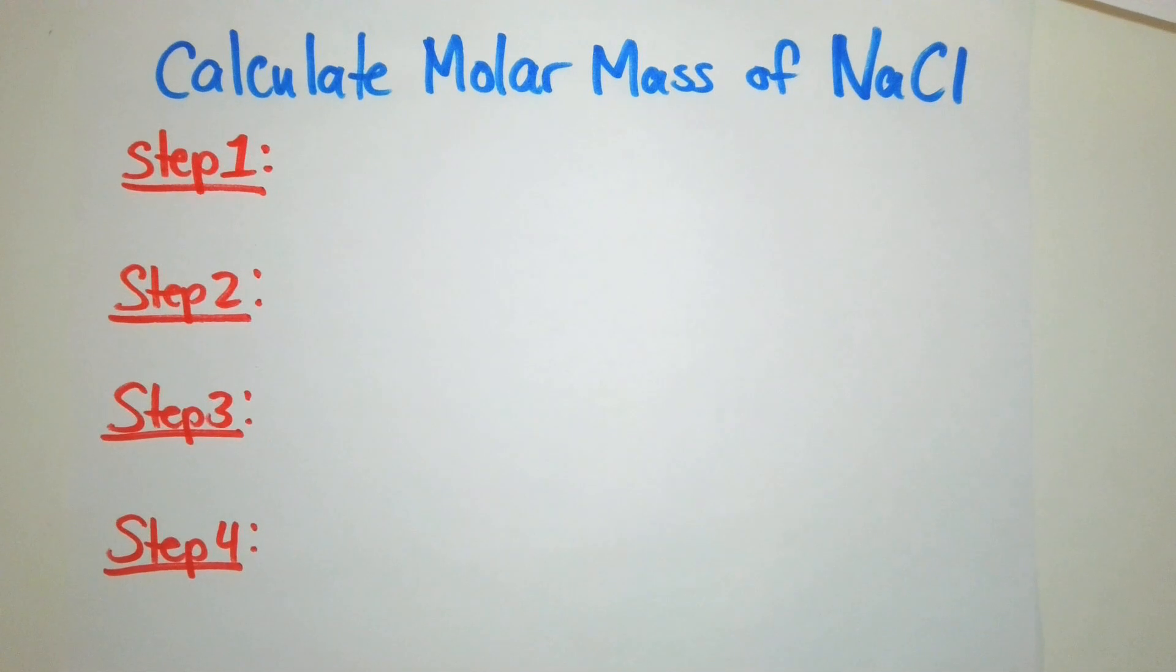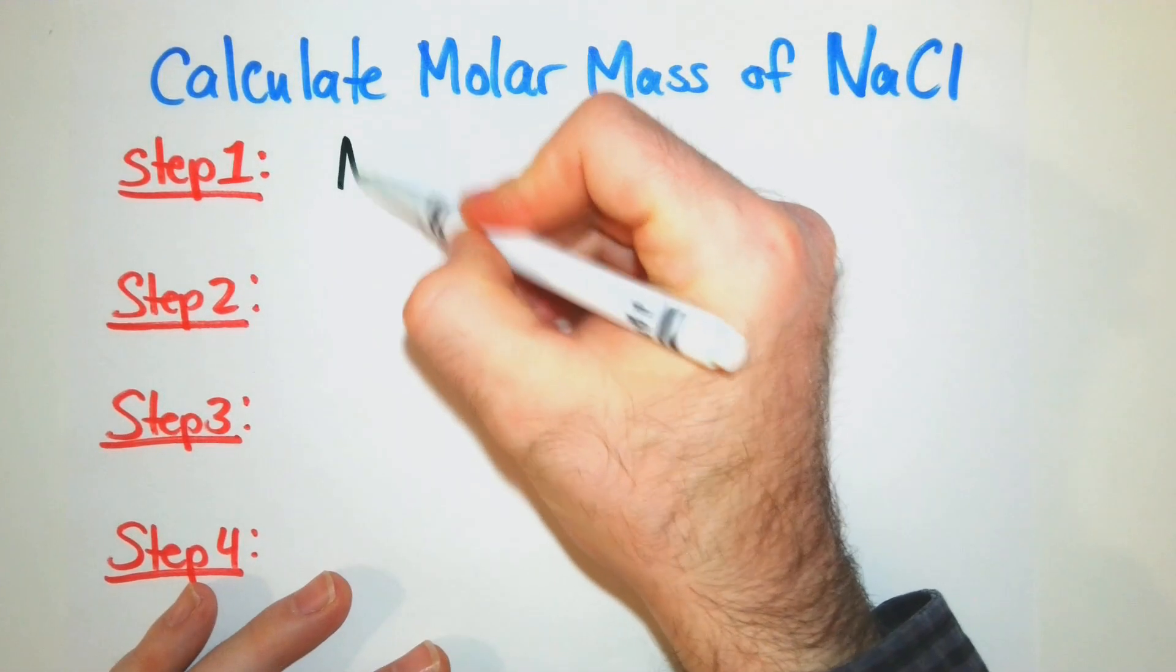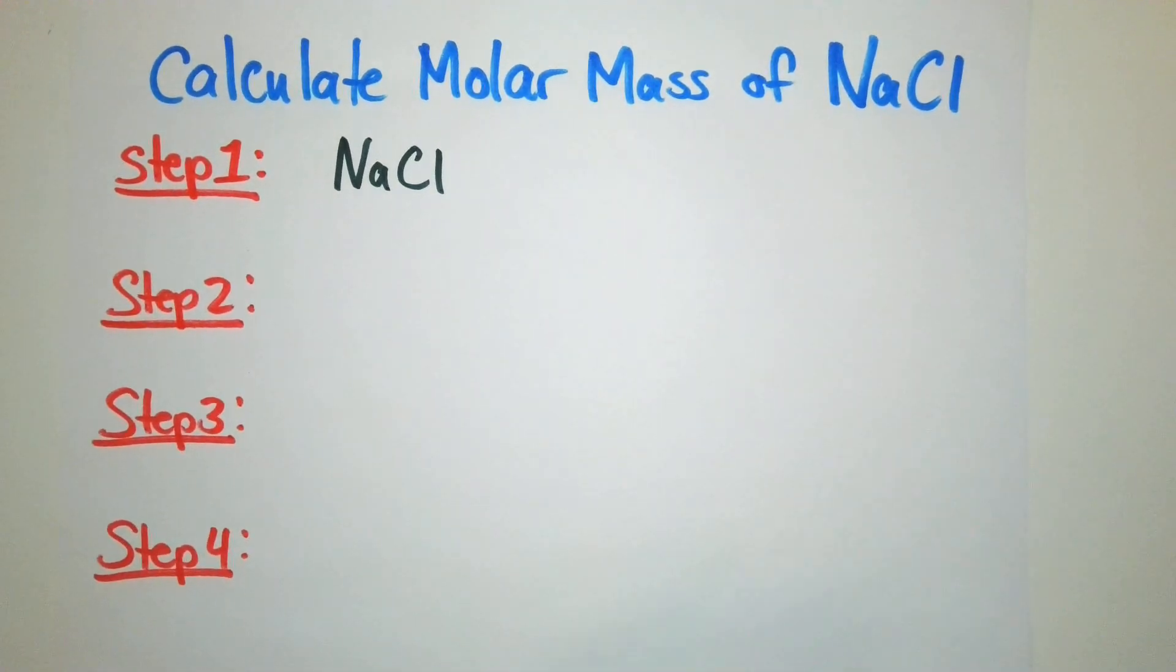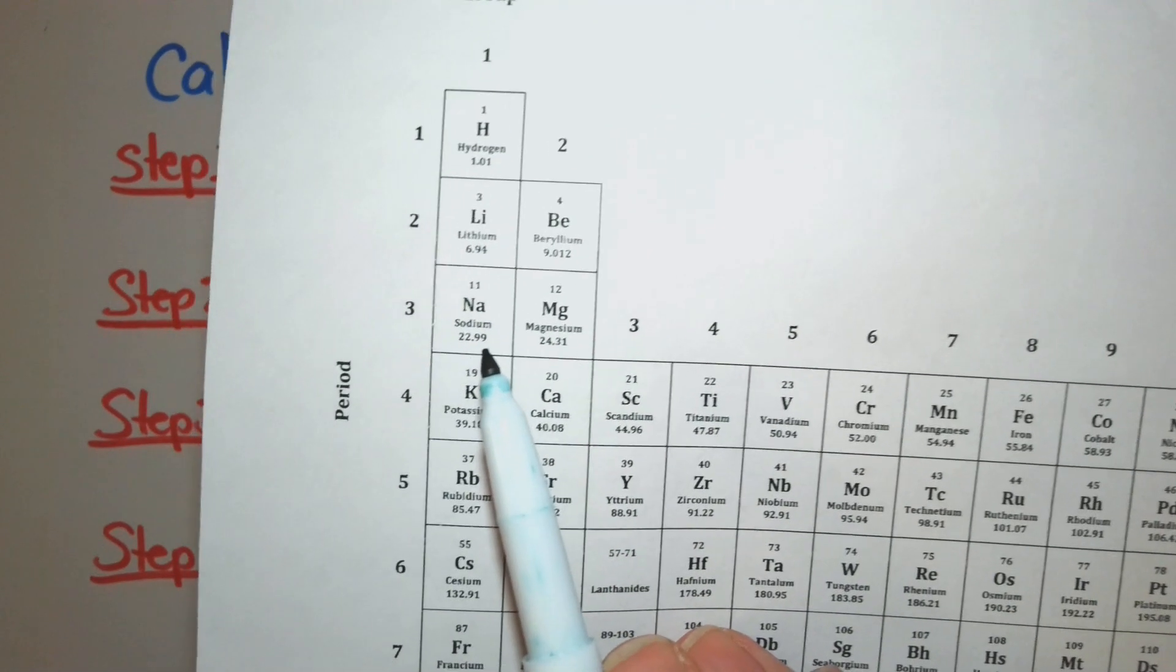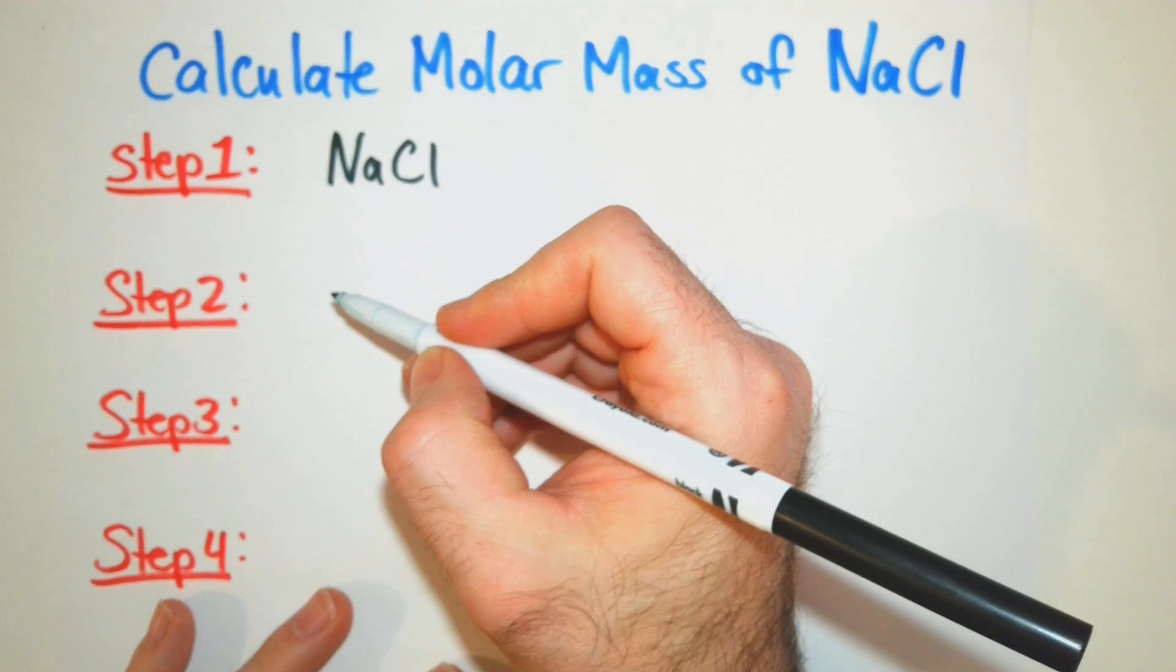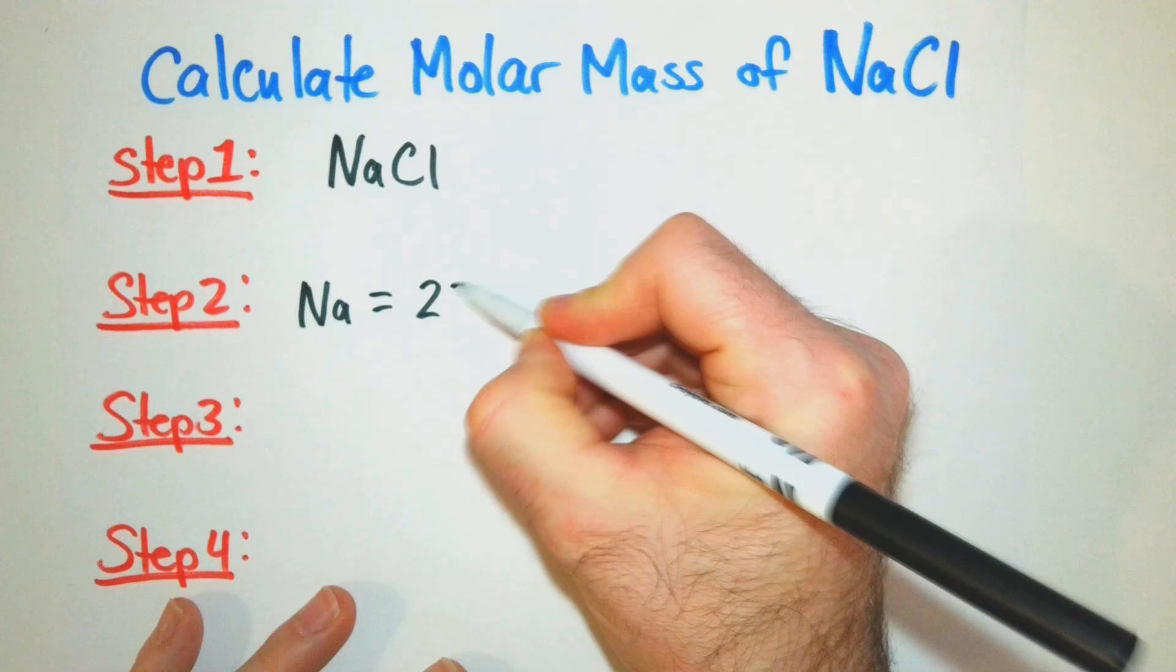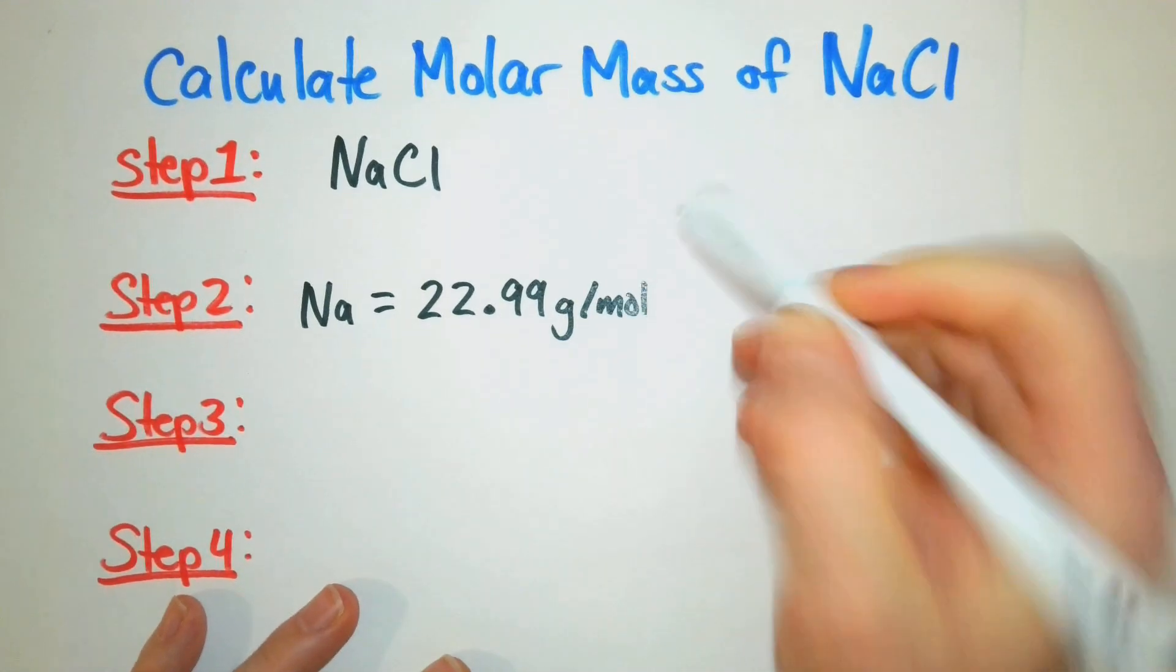Let's do another example. Here we're going to calculate the molar mass of sodium chloride. Step one is we're going to write the chemical formula. NaCl. Do it every time, get in the habit, and then you'll remember the method. We're going to find sodium over here. This is a group one element. It is 22.99 grams per mole. So find the atomic mass of each element. Sodium equals 22.99 grams per mole.